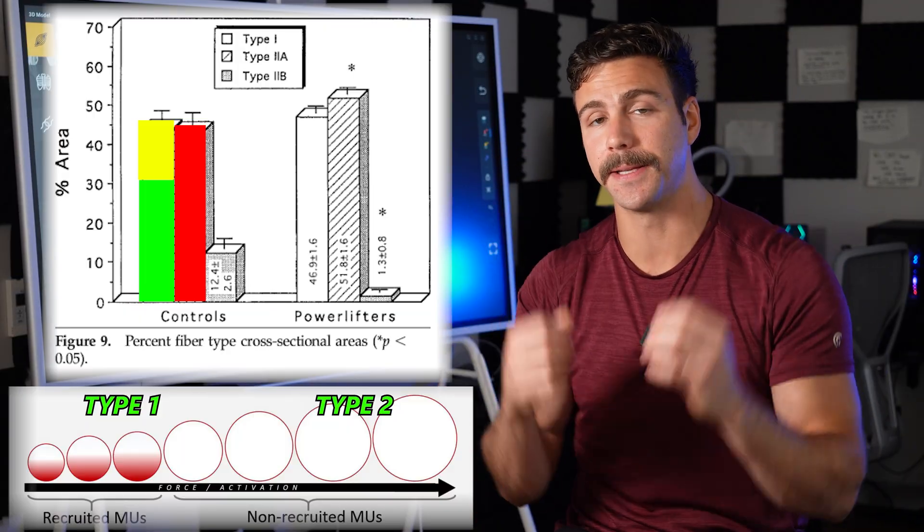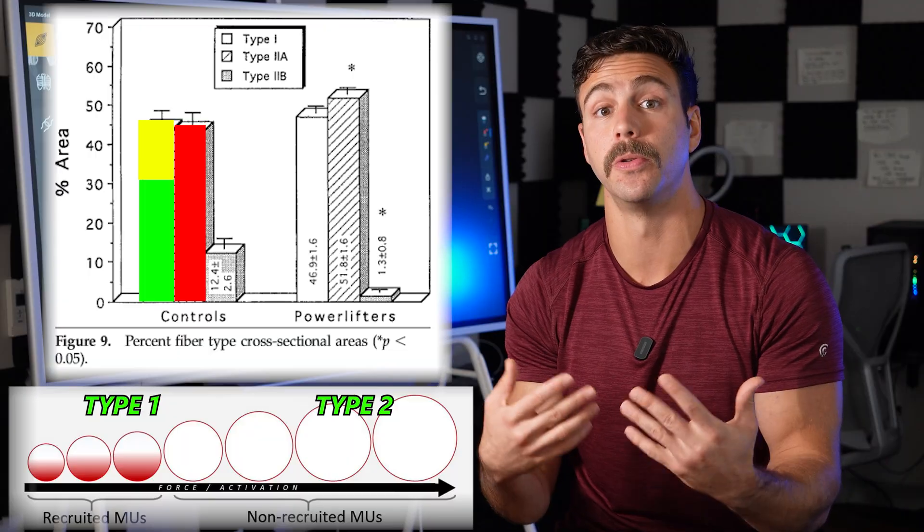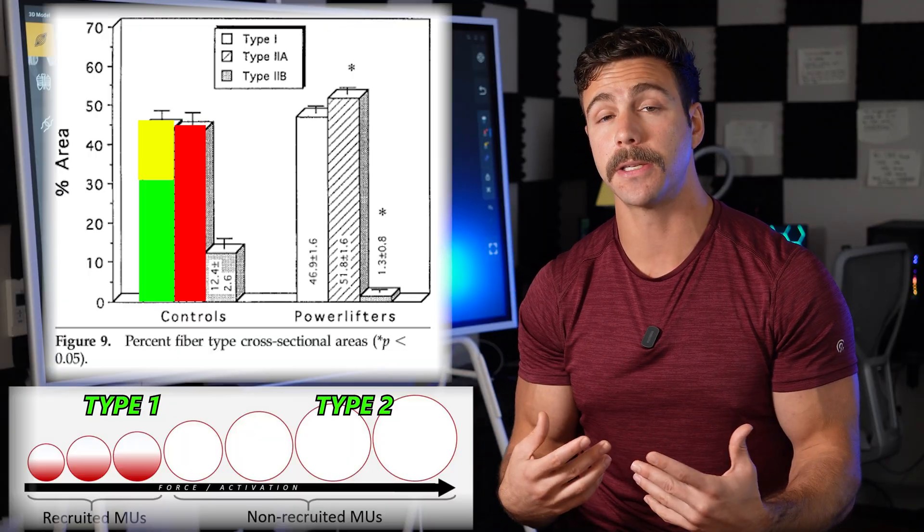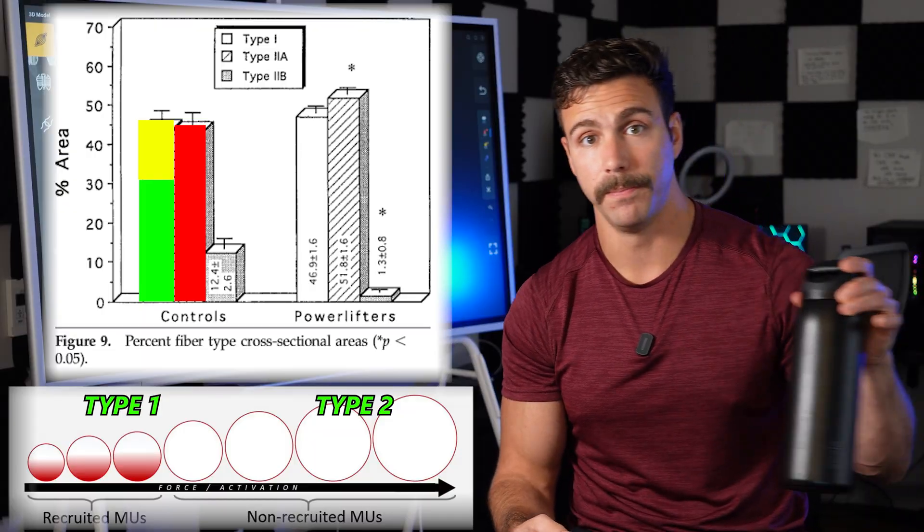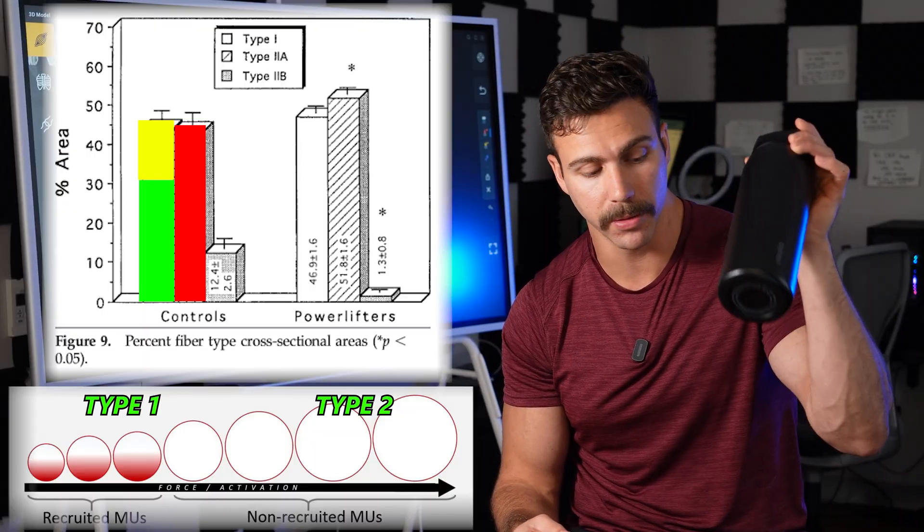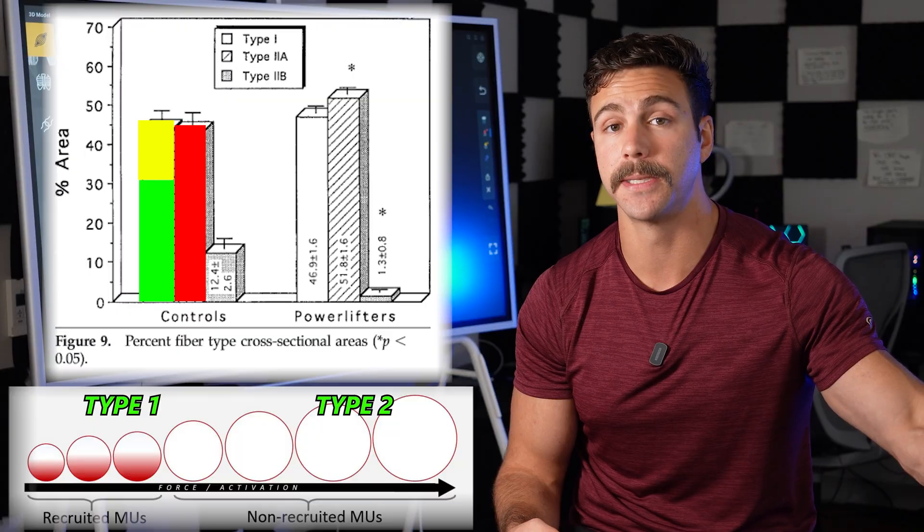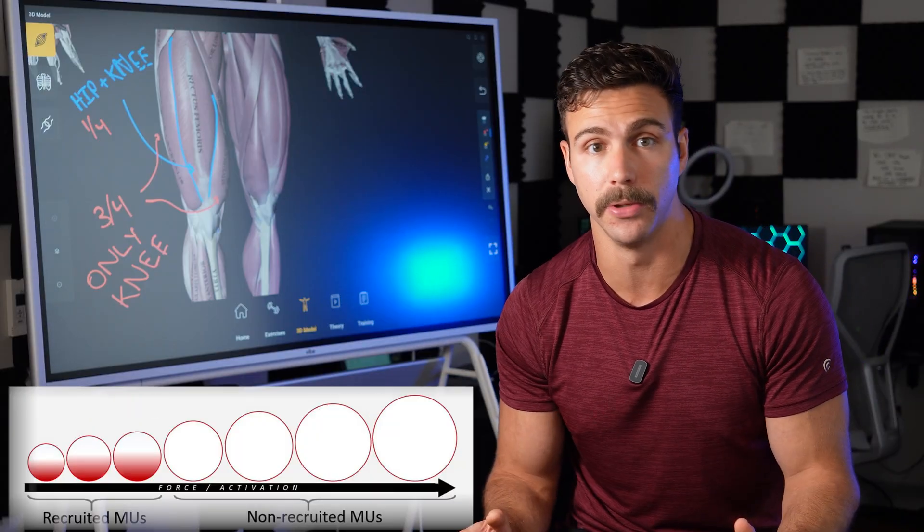Now, your brain decides on how big that central motor command, that electrical signal, is going to be based on the level of effort that you are trying to apply. For example, if I were to just pick up this water bottle, I would not be sending a signal to max out motor unit recruitment.